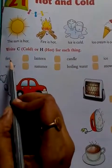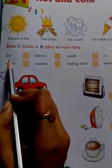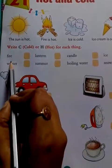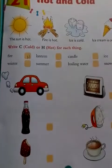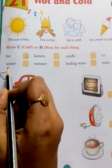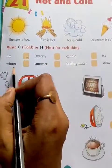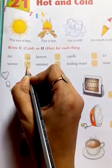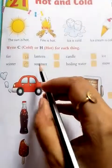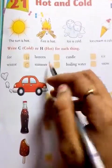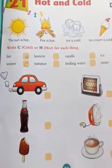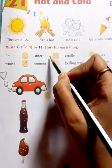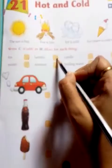Write the answer. Fire — fire is hot, so you will write H. Next, winter — winter is cold, so write C. Lantern, means lamp jiska ham log bolte hai, jiske andar ek lamplight hota hai — lantern is hot, so write H.